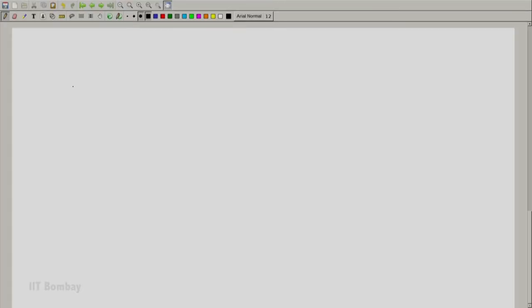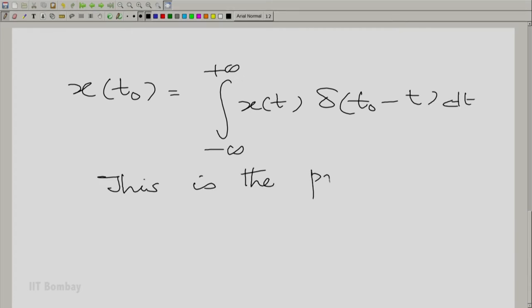Now let us interpret that property that we had. Namely that when you put many impulses together properly weighted you get back the original function. So what we mean there is x at t0 is integral over all t, xt delta t0 minus t. This is the precise equation. This is the precise relation.